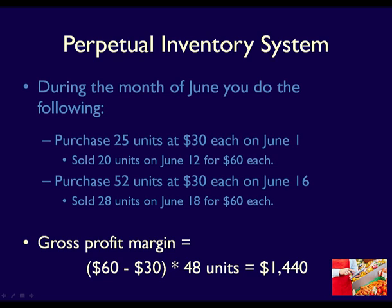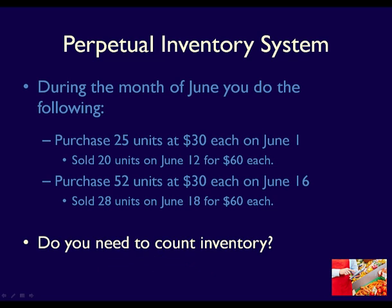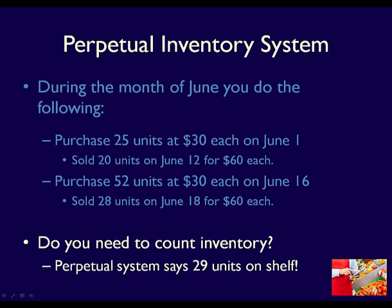This tells the business if sales of this product are profitable, allowing them to decide if prices should be changed or if they should reduce the price to be more competitive and still remain profitable. If businesses use the perpetual inventory system, do they still need to count their inventory at period end? After all, they already know that they have 29 units left on hand from their inventory system. Do they really need a count as well?